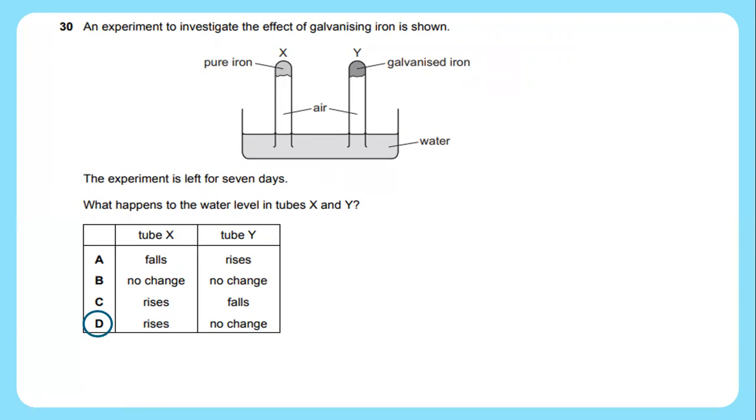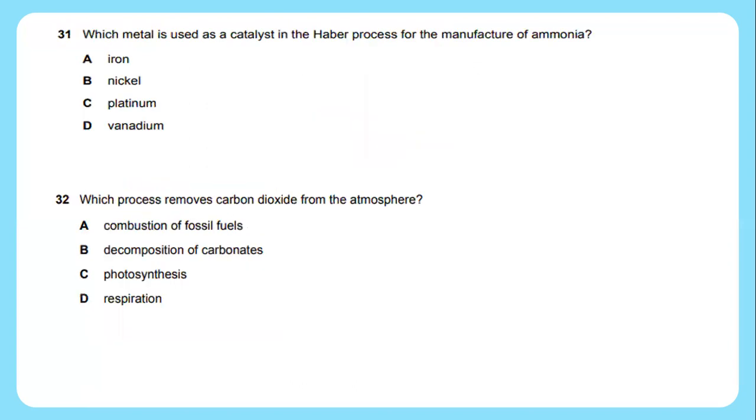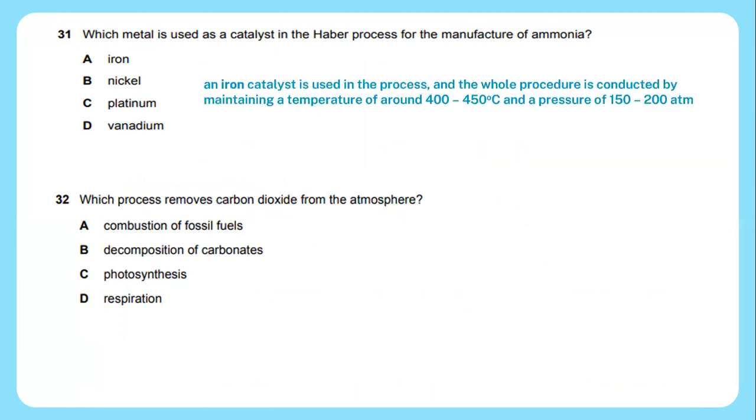Question 31: Which metal is used as a catalyst in the Haber process for the manufacture of ammonia? An iron catalyst is used in the process and the whole procedure is conducted by maintaining a temperature of around 400 to 450 Celsius and a pressure of 150 to 200 atm. So the answer will be iron.